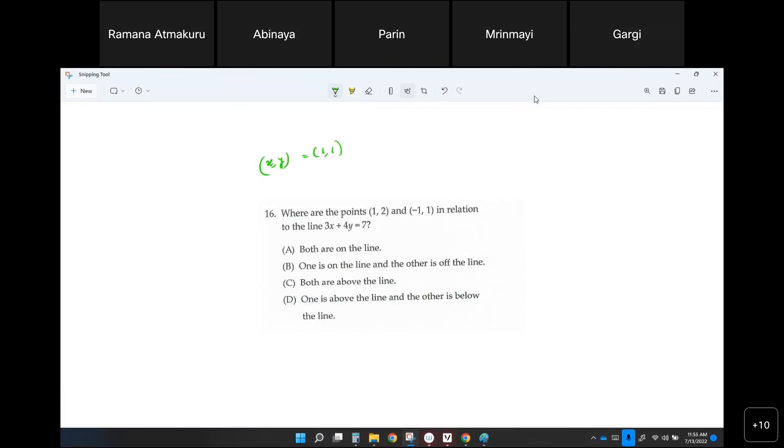That would be 3 times 1 plus 4 times 1 which is 7 equals to 7, so that is on the line. Do you all agree? The 1 comma 1 is on the line, correct?